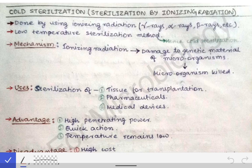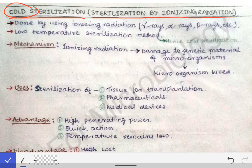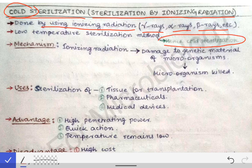We will now see another sterilization technique called cold sterilization. So far we have seen sterilization by moist heat and dry heat, but now we will see cold sterilization, also known as sterilization by ionizing radiation. This cold sterilization is done using ionizing radiations like gamma rays, alpha rays, and beta rays.